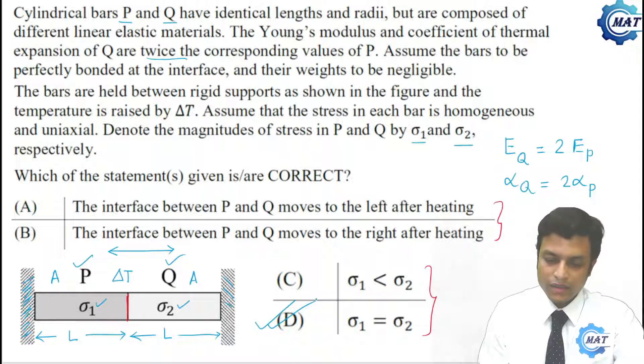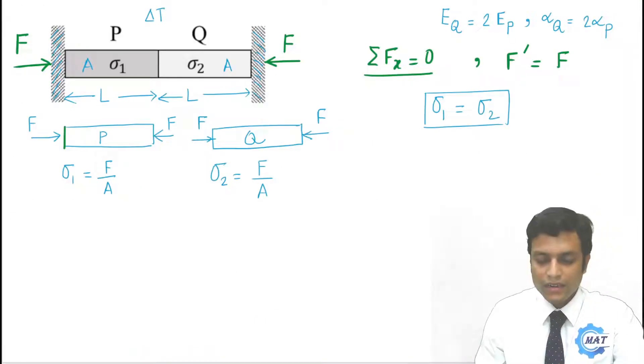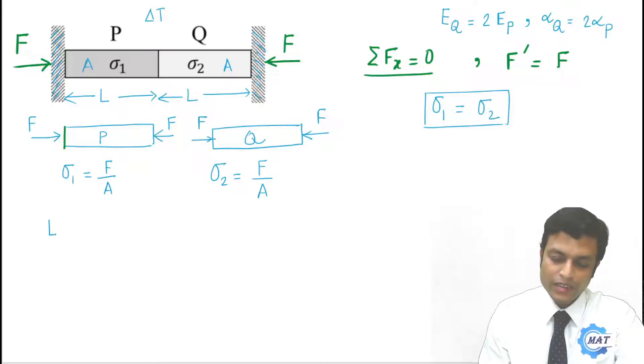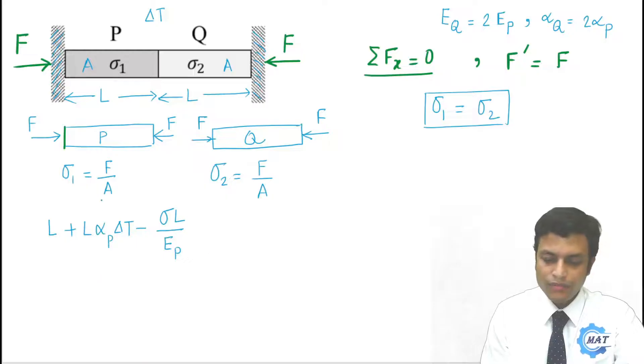Now we have to calculate the movement of the interface. This is the interface, where it will go. To get that we have to calculate the final length of two bars respectively. Say for bar P, initial length was L, due to temperature rise the elongation will be L alphaP delta T. And due to this compressive stress the length will be reduced by sigma L by EP. So this is the final length of bar P.